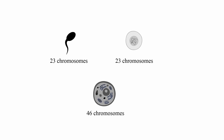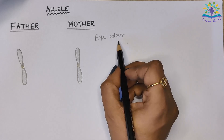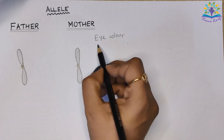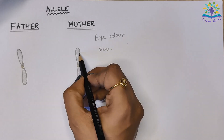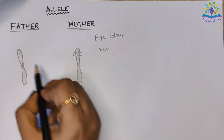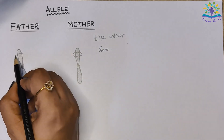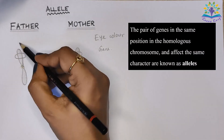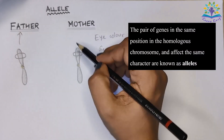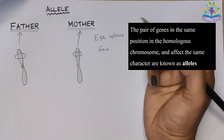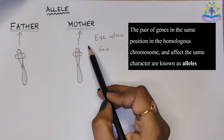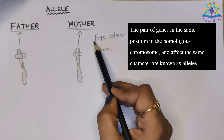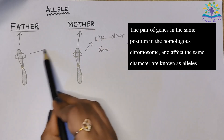Upon fertilization, the zygote gets 46 chromosomes. That is, it will have two sets of information or genes for each feature. This pair of genes in the same position in the homologous chromosome and that affect the same character are known as alleles.